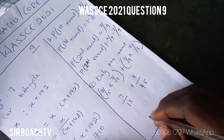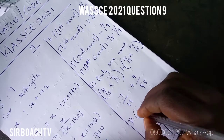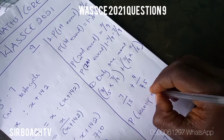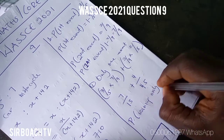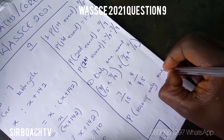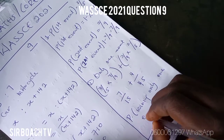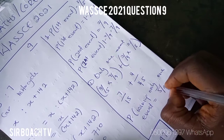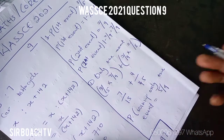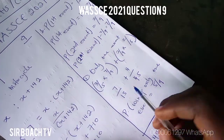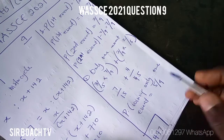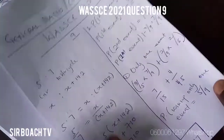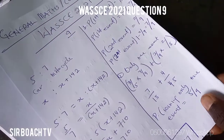After solving this fraction, the probability of winning only one event is 5 over 9. Try it and verify. That is the probability of winning just one event.